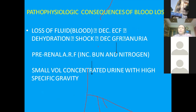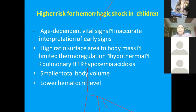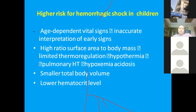The pathophysiological consequences of blood loss include decreased extracellular fluid, dehydration, shock, decreased glomerular filtration rate, and oliguria — with prerenal ARF producing small-volume concentrated urine with high specific gravity. Infants are at particularly high risk of hemorrhagic shock due to age-dependent vital signs that are inaccurate in interpreting early signs, high surface area to body mass ratio, limited thermoregulation, hypothermia, hypoxemia, acidosis, very small total blood volume, and lower hemoglobin levels.